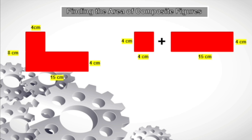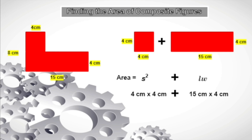We have a square and a rectangle, and we need to add the areas of these two. To find the area of a square we use side times side, or side squared. For the area of the rectangle we use length times width. Now let us substitute the values: for the area of the square we have 4 centimeters times 4 centimeters, plus for the area of the rectangle we have 15 centimeters times 4 centimeters.